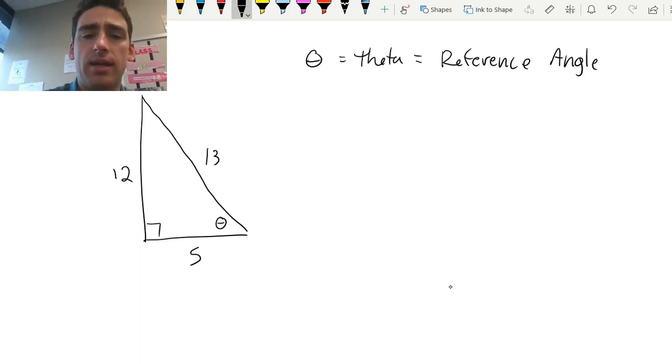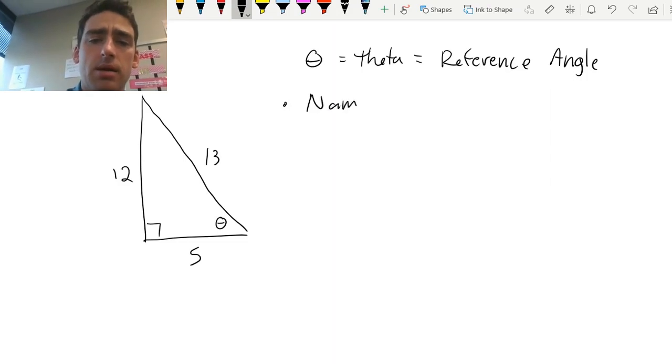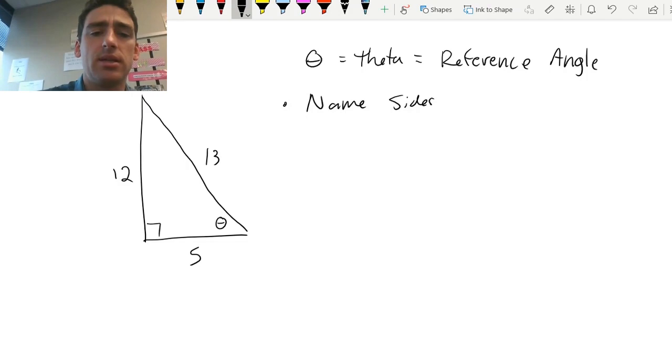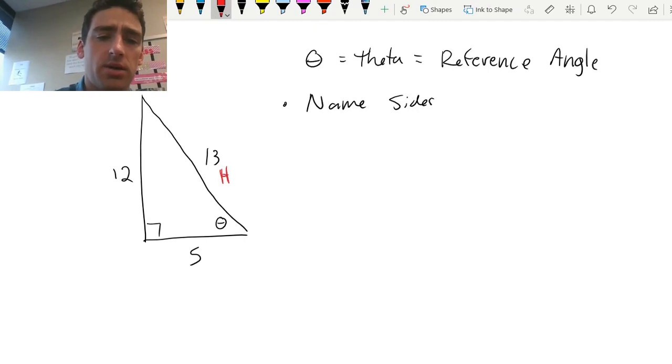Once I do that, I need to name my sides. So I know that my long side, 13, is the longest. It's also across from the 90 degree angle. I know that's going to be my hypotenuse. I know that the side across from theta is going to be the opposite because it's opposite of the reference angle. And the side that is attached is the adjacent.